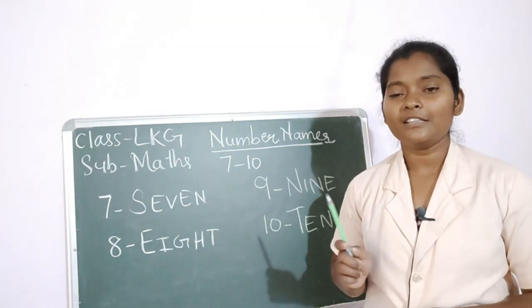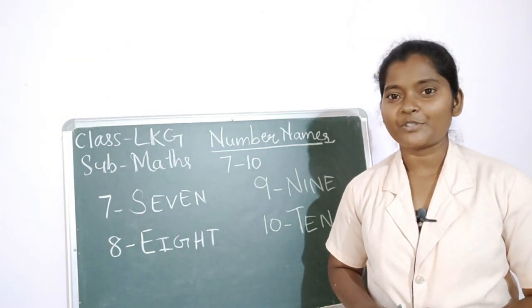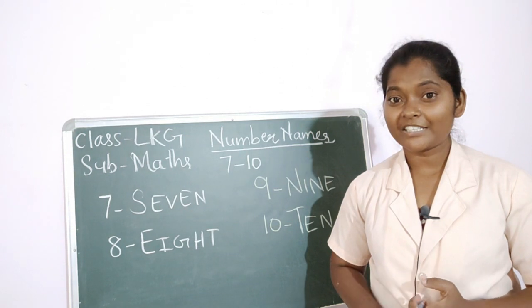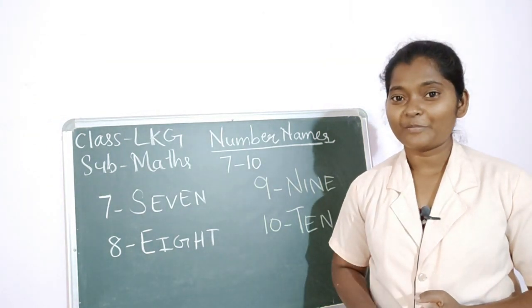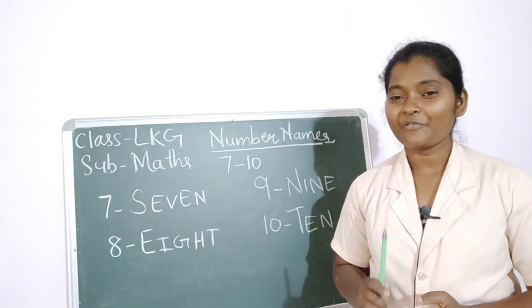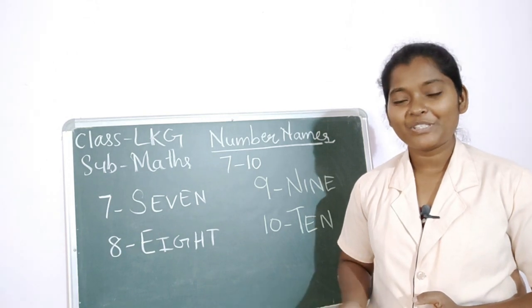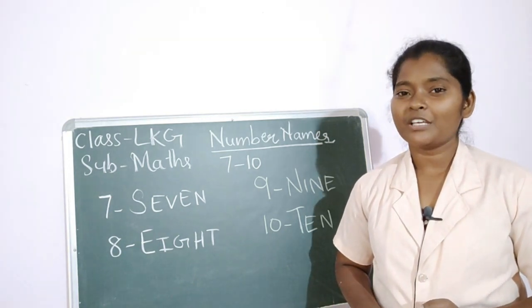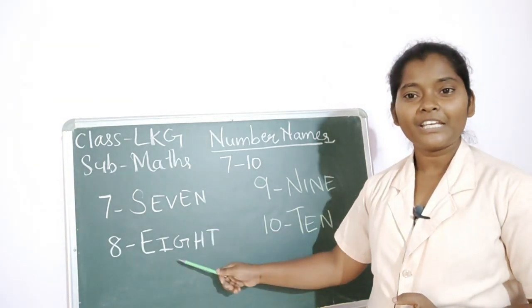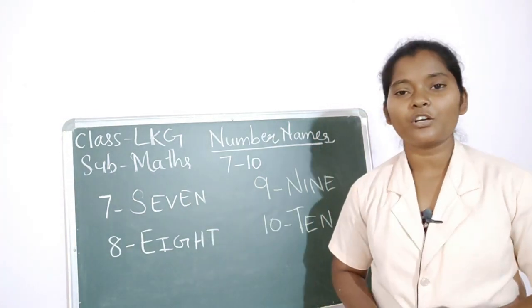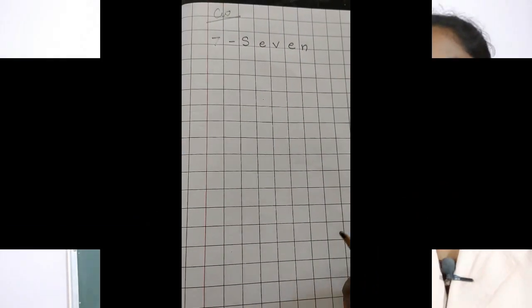E I G H T — 8, N I N E — 9, T E N — 10. Okay students, like this you learn one to ten — the number names. In our second term exam, number names from one to ten is going to come. So today we are going to write the spelling of seven, eight, nine, and ten. Take out your maths copy, my dear kids.